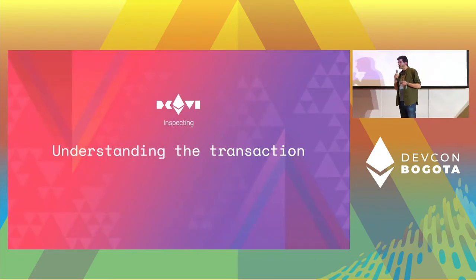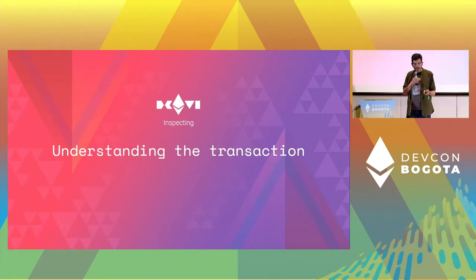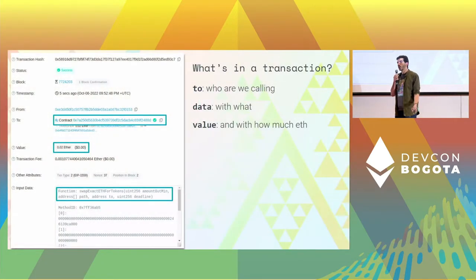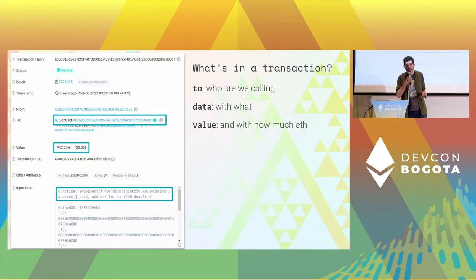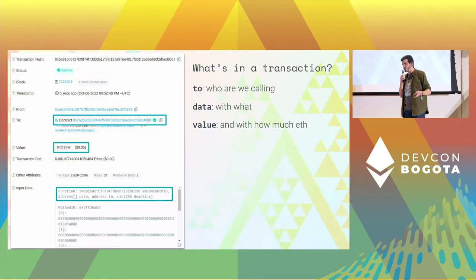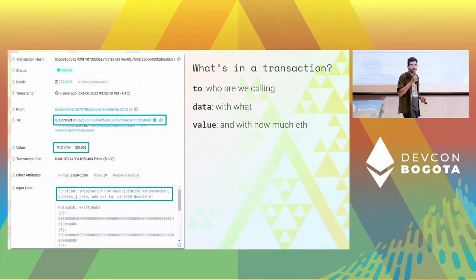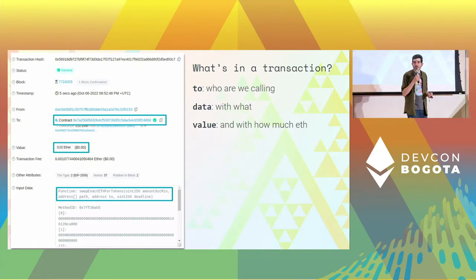We'll begin by understanding the transaction — understanding what's in a proposal. What's actually in a regular Ethereum transaction: we have a recipient, we have something we usually call a contract, that contract will do stuff and will most likely call into other contracts. We have a piece of data where we say we want you to execute this, this, and that — in this case, for instance, a swap. And we may have a value, basically something that we send to it.